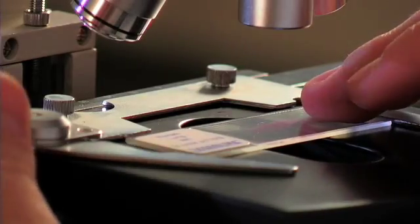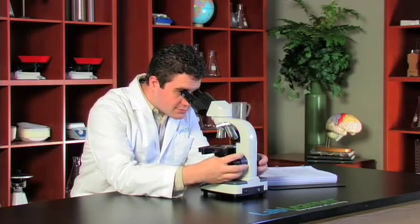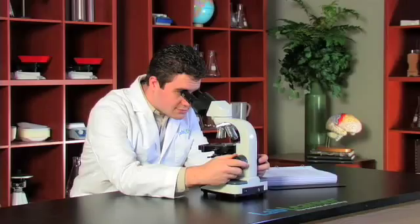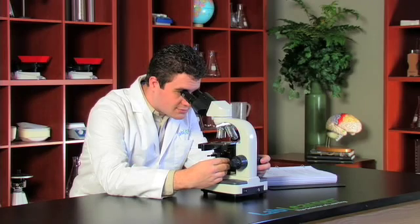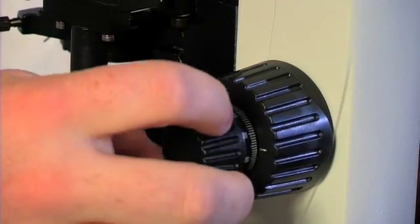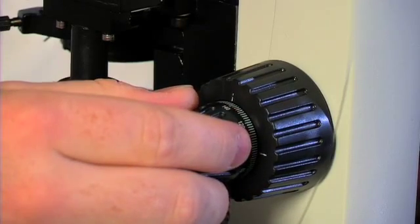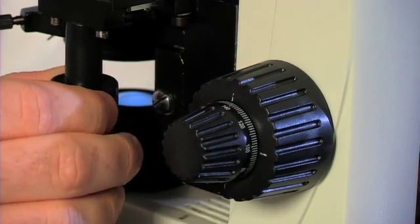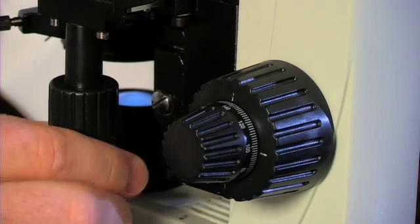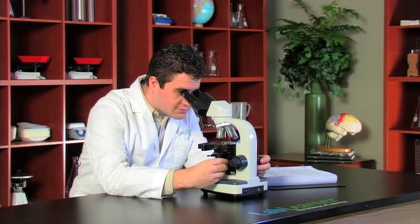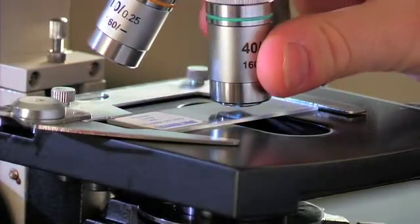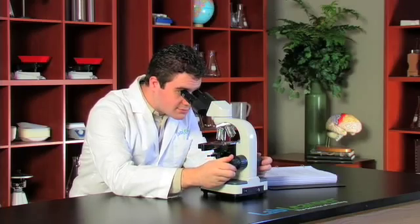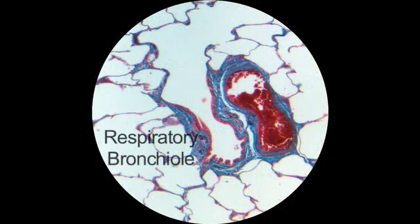The next slide we're going to look at is normal human lung. We do exactly the same thing — put the slide on the stage when it's in its lowest position, use the coarse adjustment to bring it up until it comes into focus, then move to the fine focus. We can use the fine focus as we move up in magnification. The translocation knob lets us move the slide back and forth and up and down. Once we have a well-focused image, we can switch to higher magnifications and again just use the fine focus.